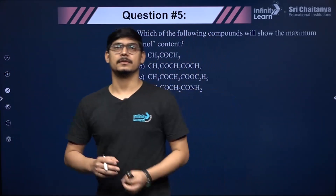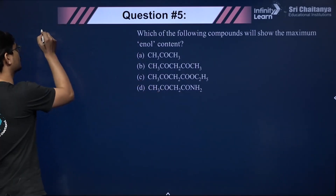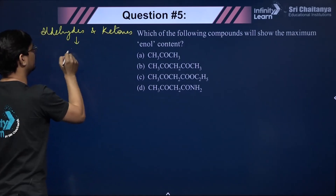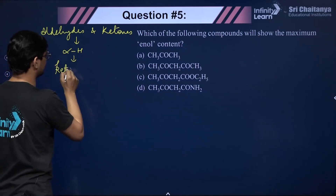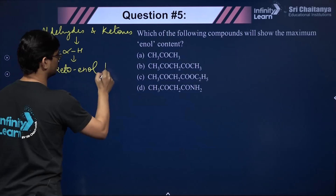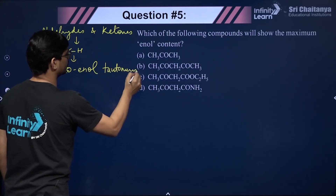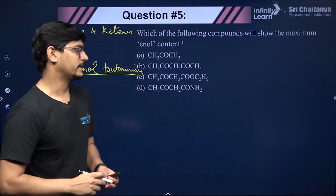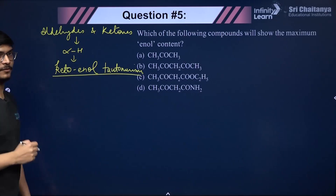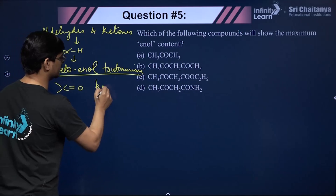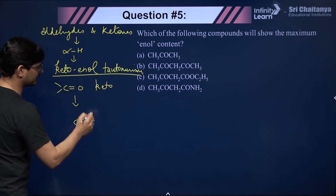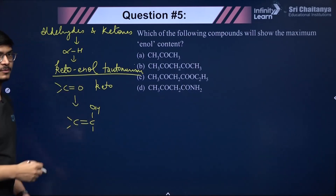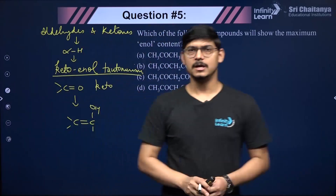Aldehydes and ketones with at least one alpha hydrogen show keto-enol tautomerism. Generally, for compounds with only one carbonyl group, the keto form is more stable, since the enol form replaces a C=O bond with a weaker C=C bond. However, for beta-dicarbonyl compounds — those with two carbonyls separated by CH₂ — the enol form is more stable.